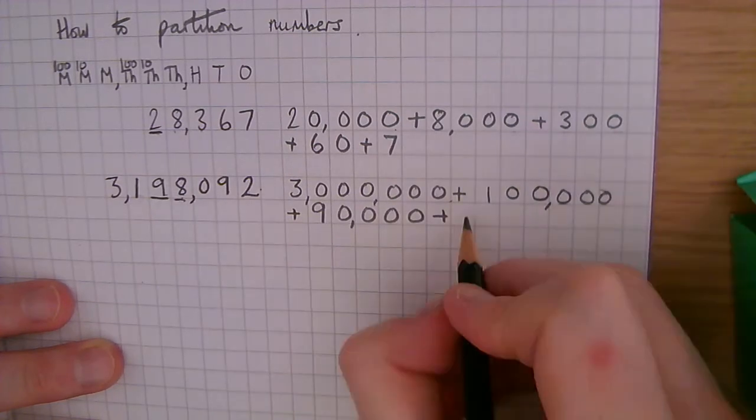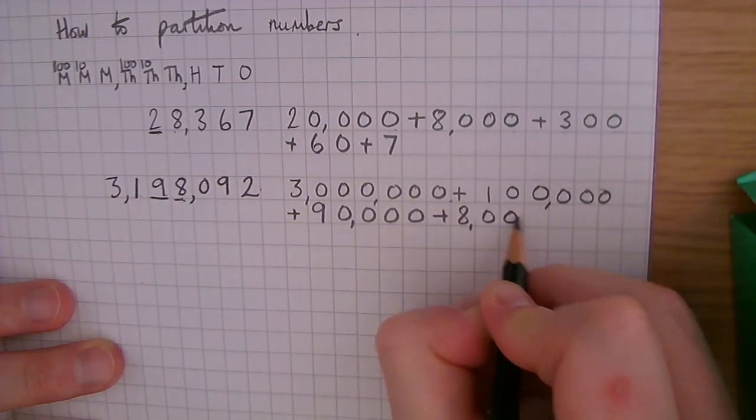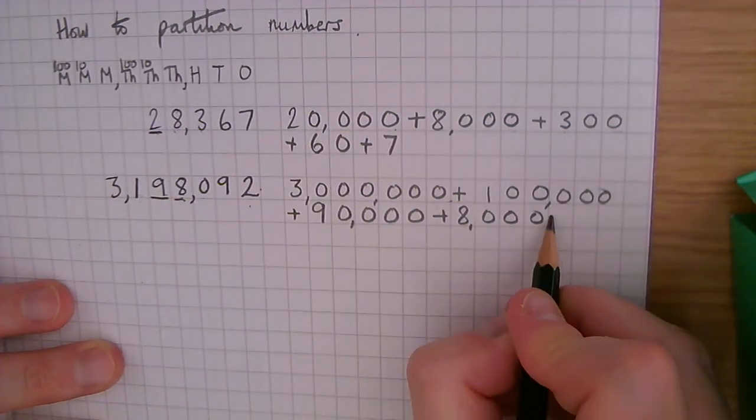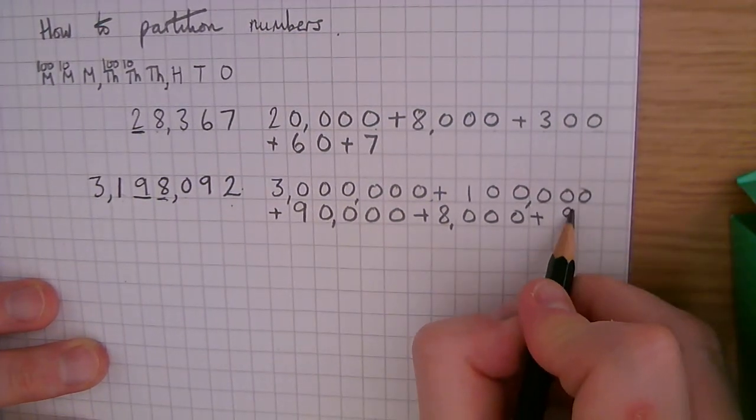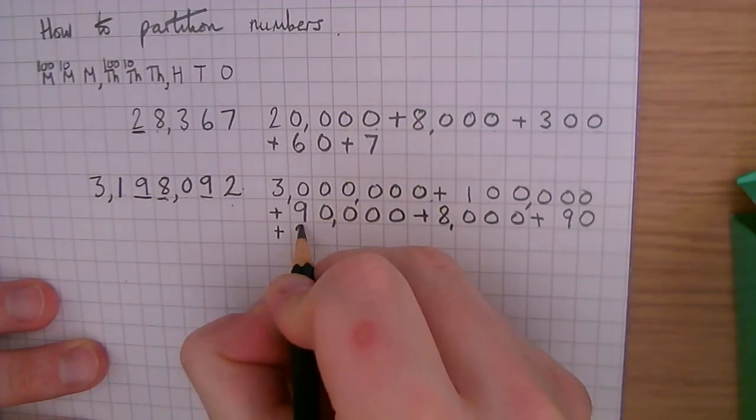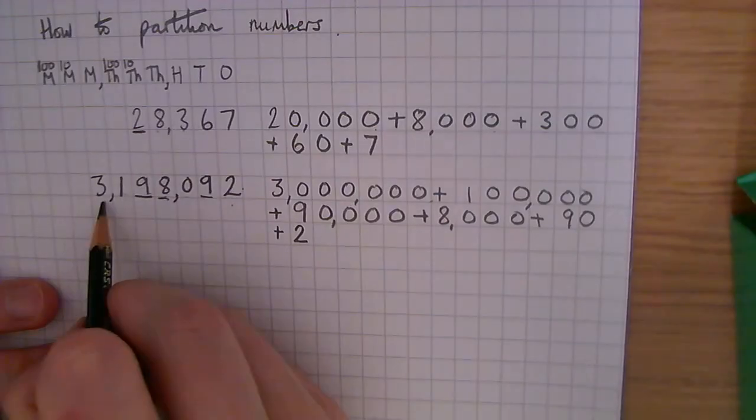Eight thousand, add eight thousand, that's eight zero zero zero, add ninety, that's nine tens, and two.